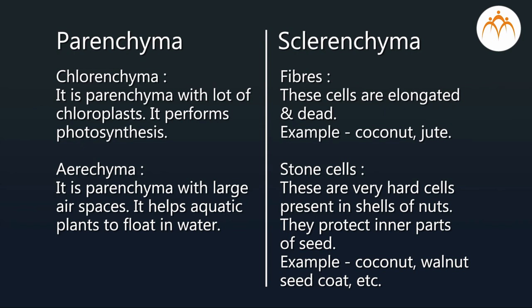Fibers are long dead sclerenchyma cells; examples include coconut and jute. Stone cells are very hard cells present in shells of nuts; they protect the inner parts of the seed. Examples include coconut, walnut, and seed coats.